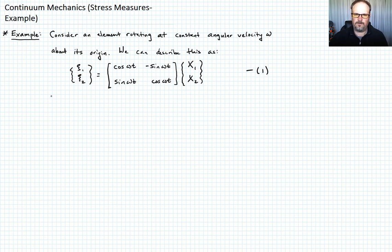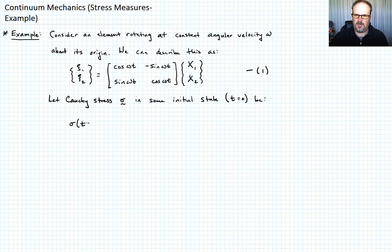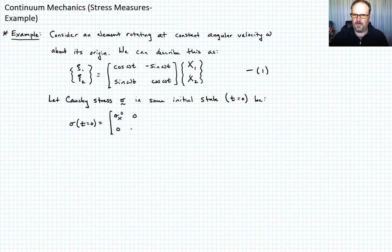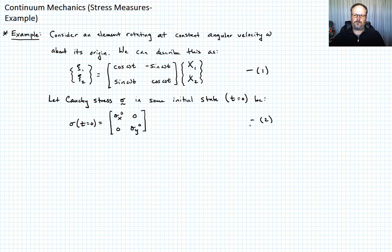Now we're going to let the Cauchy stress in some initial state be given as follows. Sigma evaluated at t equals zero — the initial state — is just going to have normal forces in X and Y: sigma_x naught and sigma_y naught. So I'm just working in two dimensions here. Call that equation two.